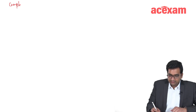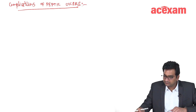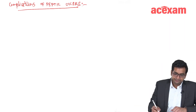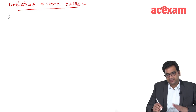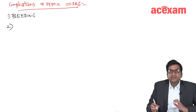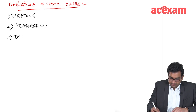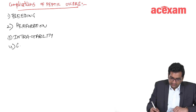Complications of Peptic Ulcers. I'll first name all the complications, then I'll explain them. The first complication is bleeding — bleeding is the most common complication of peptic ulcer. Then there is perforation, intractability, and gastric outlet obstruction.